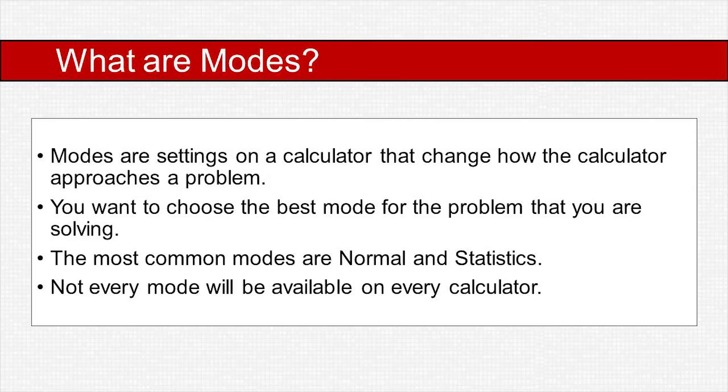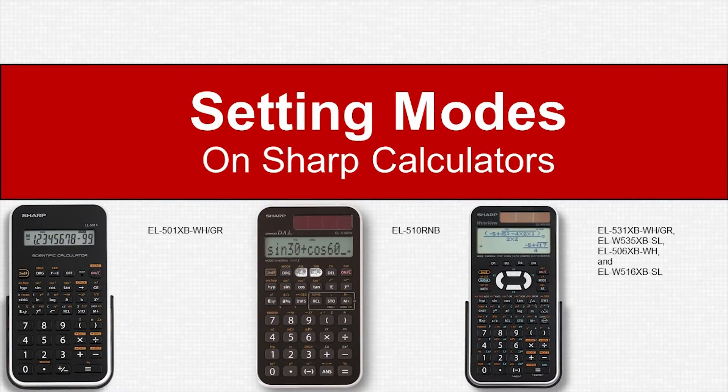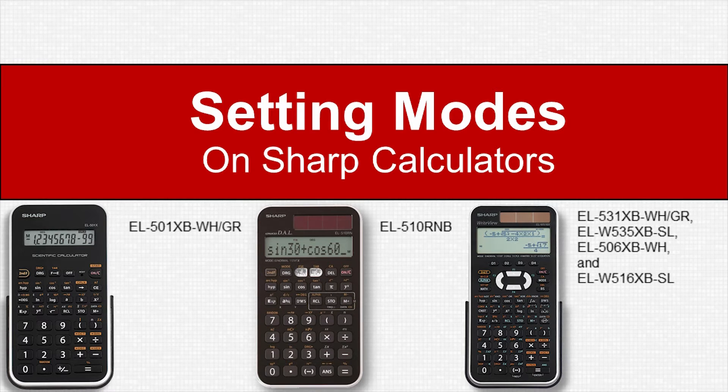The focus of this tutorial will be about general tips for accessing modes on your calculator along with an overview of what each mode is. Setting modes on Sharp calculators: first we will cover the EL-501XB-WH and XB-GR, then the EL-510RNB, last we will cover the EL-531XB-WH/GR, ELW535XB-SL, EL-506XB-WH, and ELW516XB-SL.